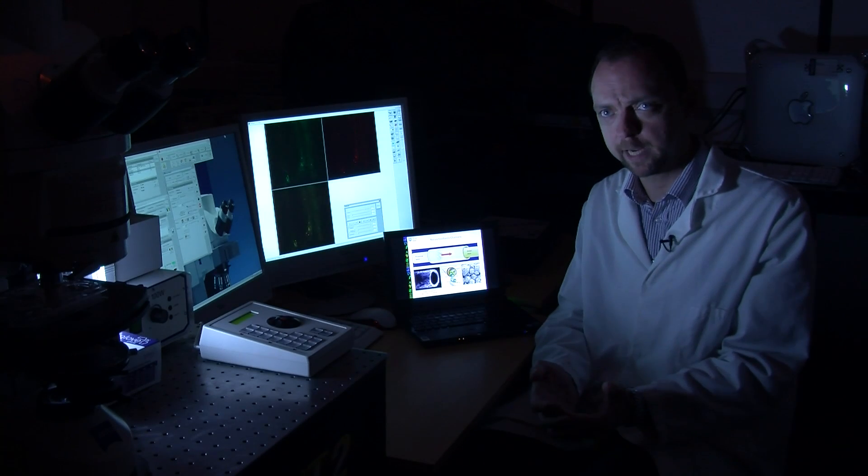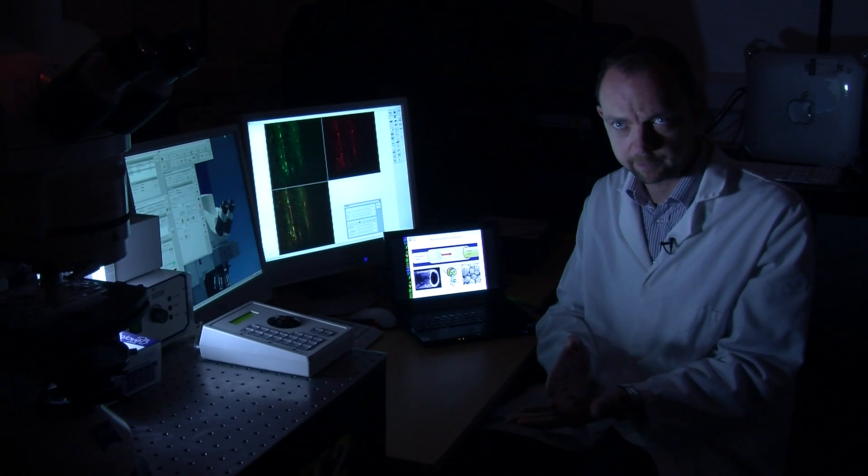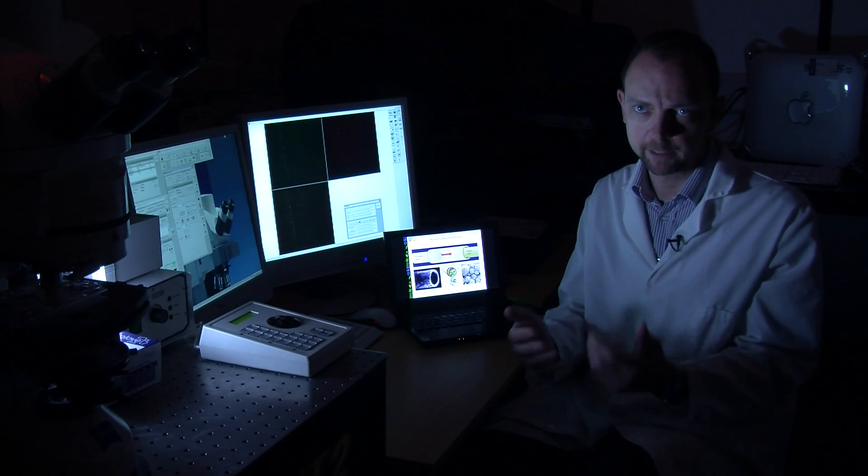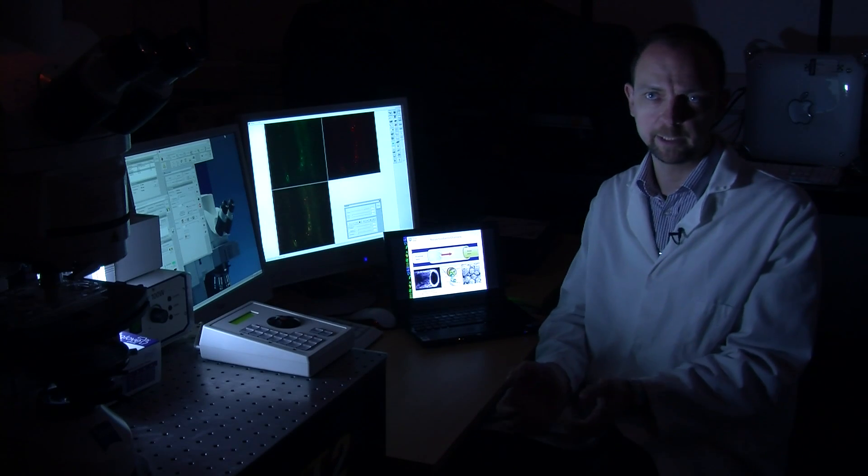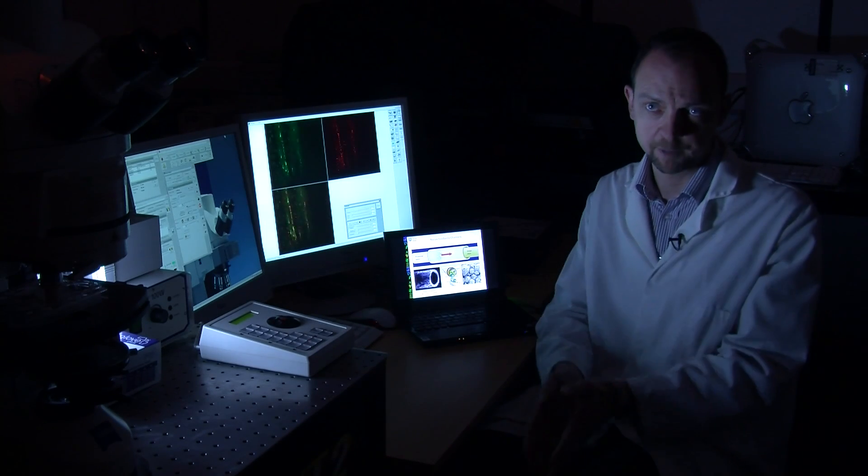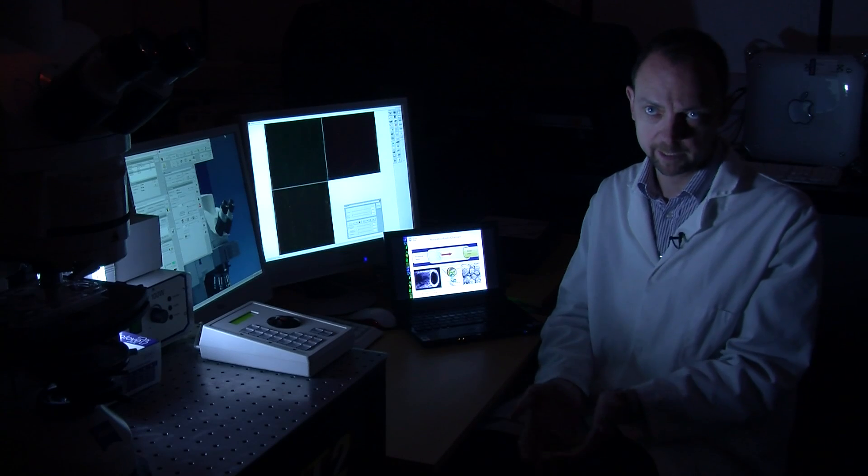Surgically, those nerves can be stitched together if you have a clean knife cut, but in many instances you lose a gap - you might lose a centimeter or two centimeters of nerve. The peripheral nervous system is quite unique and differs from the central nervous system, the spinal cord, because it can repair, it can regrow.